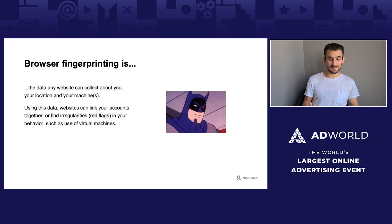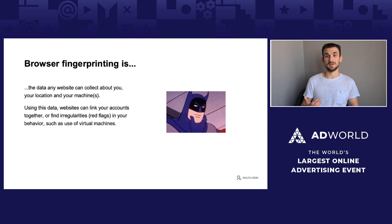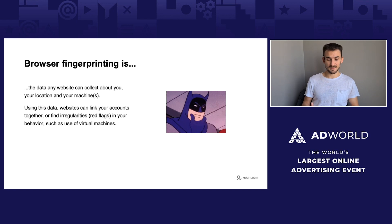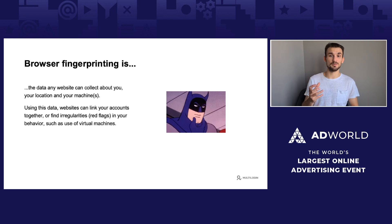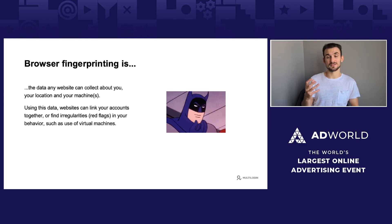Browser fingerprinting is simply the data a website can collect about you. They can collect information about your location, information about your browser or your device. Using this data, websites can link accounts together or find different irregularities or problems in your browser setup. For example, they can detect that you're using a virtual machine or browsers that have altered browser fingerprints.